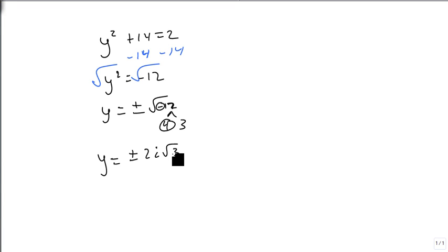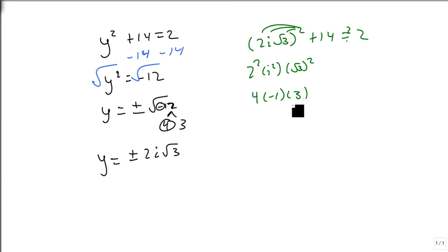Now let's check this one. I just want to make sure that we've got this. So we're going to take positive 2i square root of 3 and we're going to square it. Add 14 to it and make sure that's a 2. So that square applies separately to each piece. So 2 squared times i squared times the square root of 3 squared is 4 times negative 1 times 3. Plus 14, does that equal 2? 4 times 3 is 12. Times a negative is negative 12. Plus 14 equals 2. And sure enough, 2 does equal 2. So we know we have our answer.